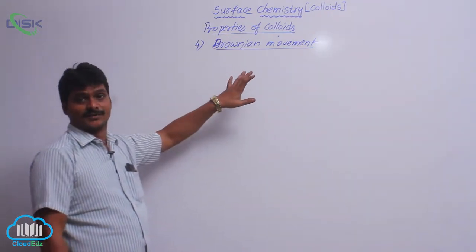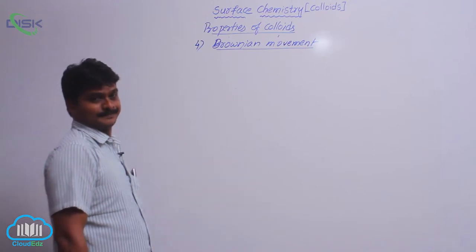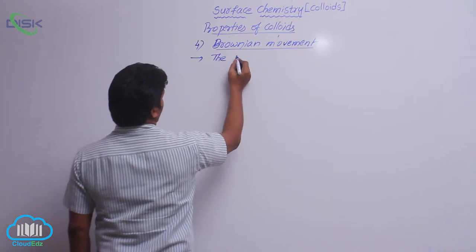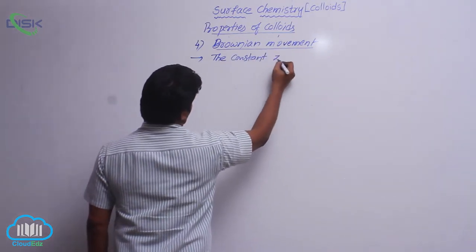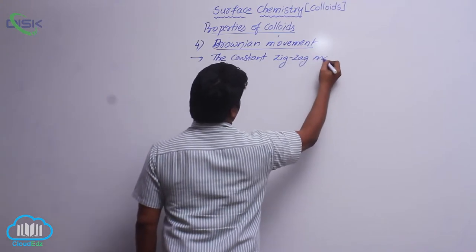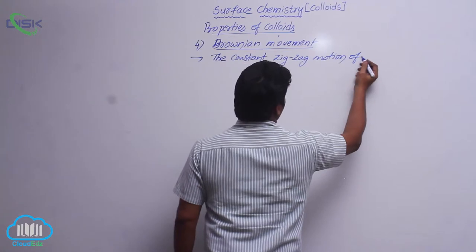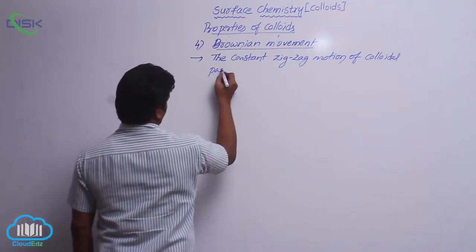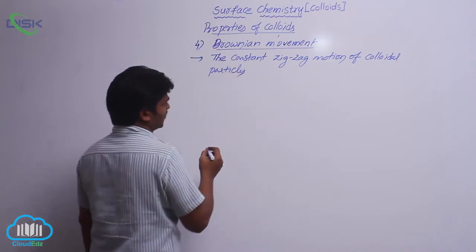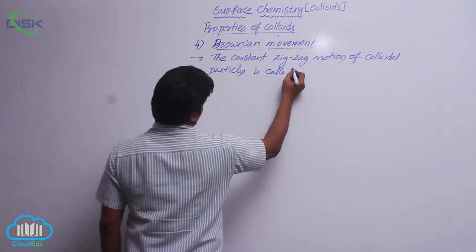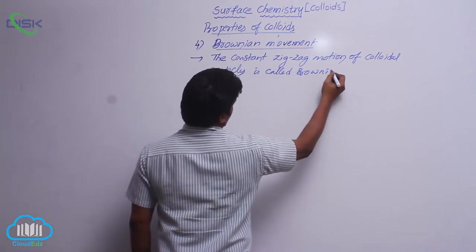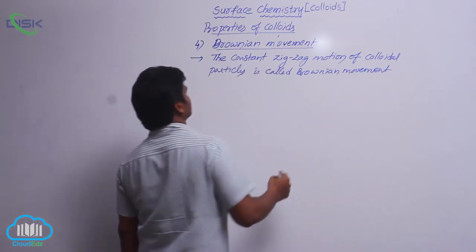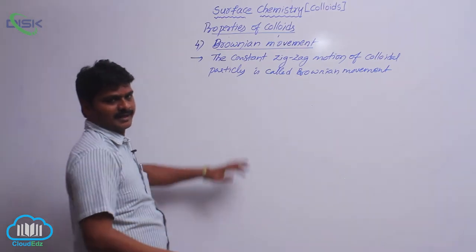It was first observed by the scientist Brown. The constant zigzag motion of colloidal particles is called Brownian movement, because it was observed by the scientist Brown — that is why it is named so.